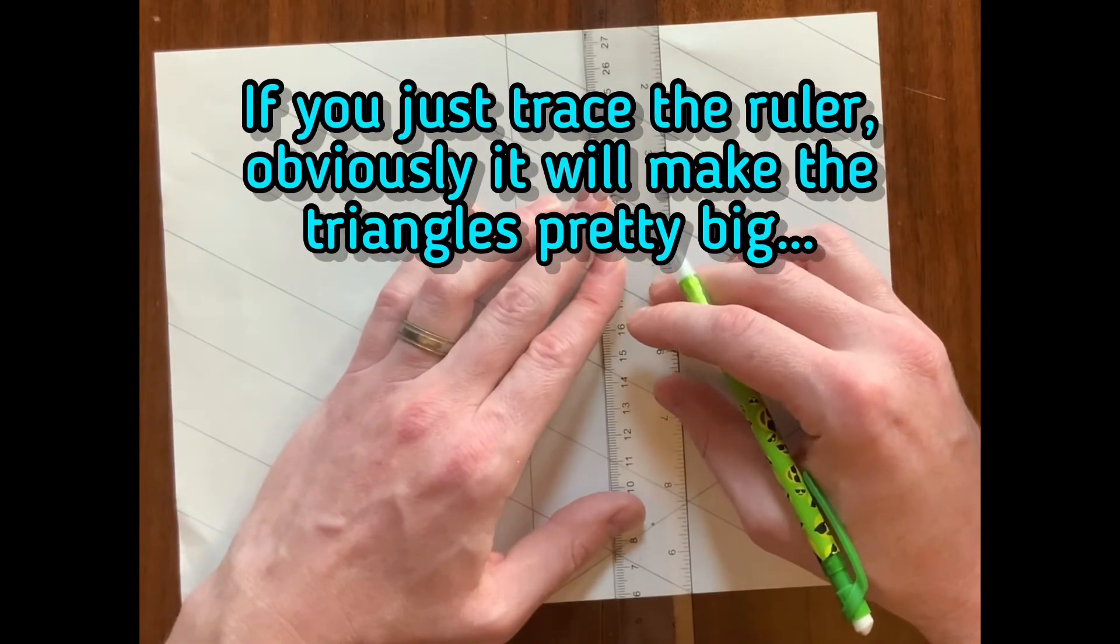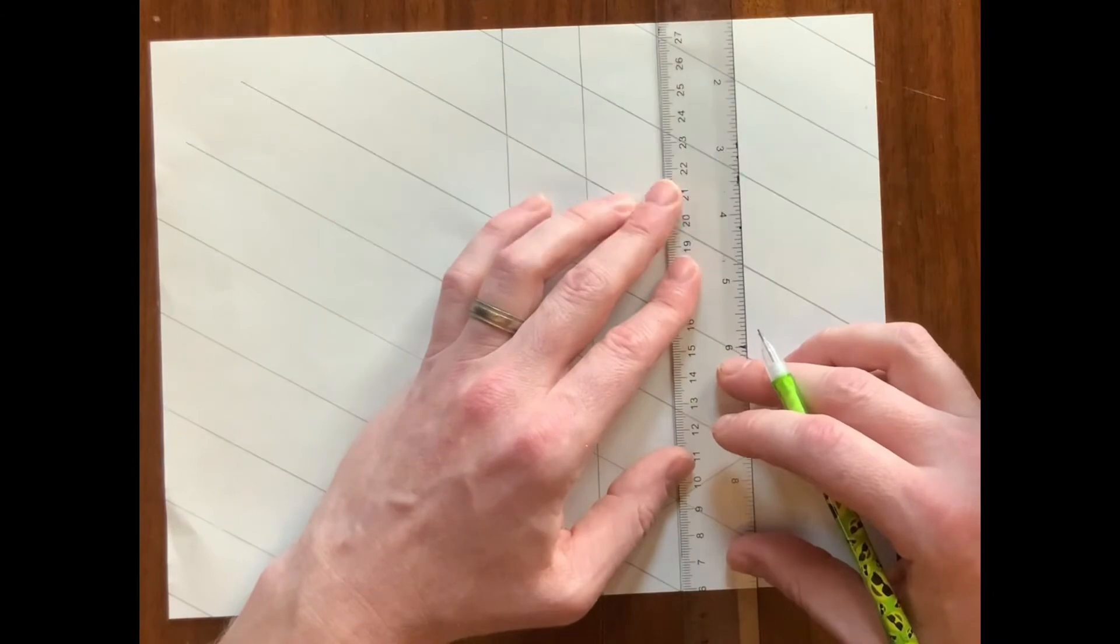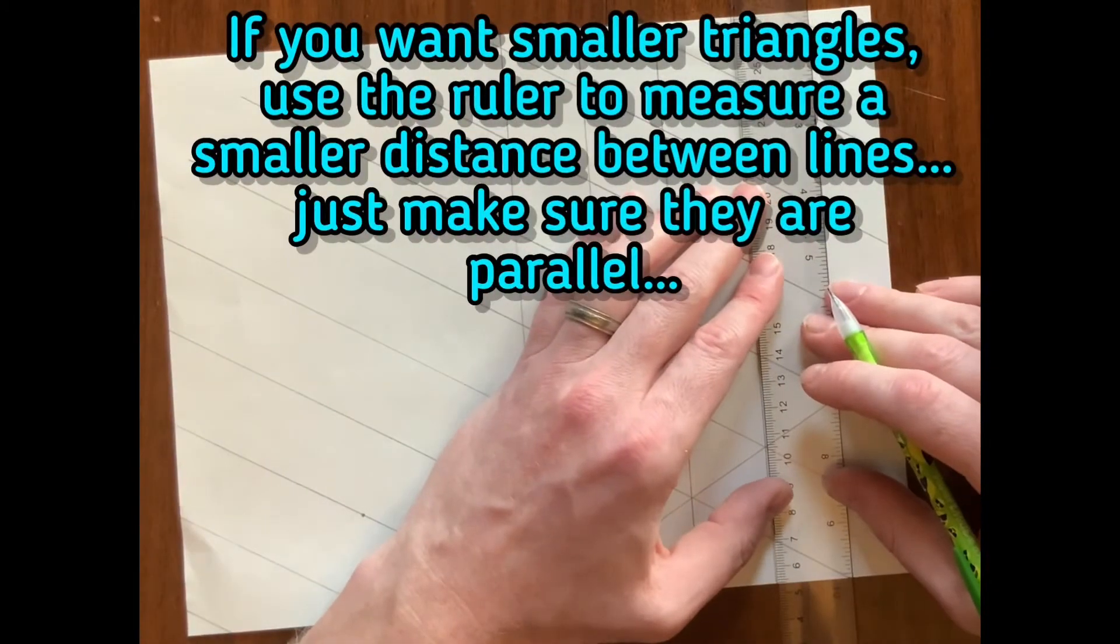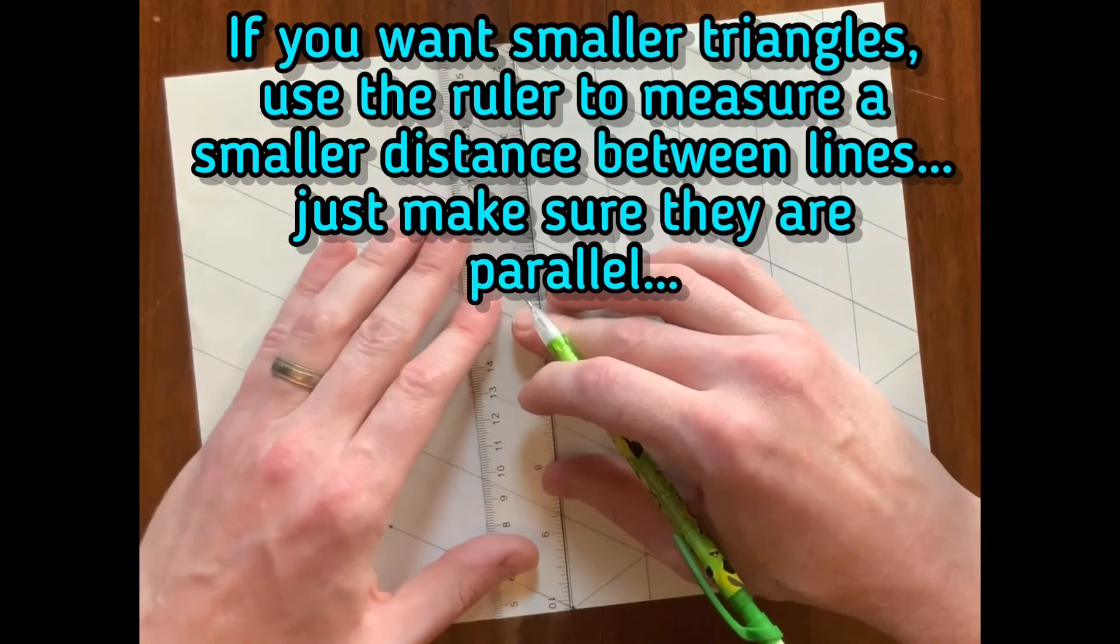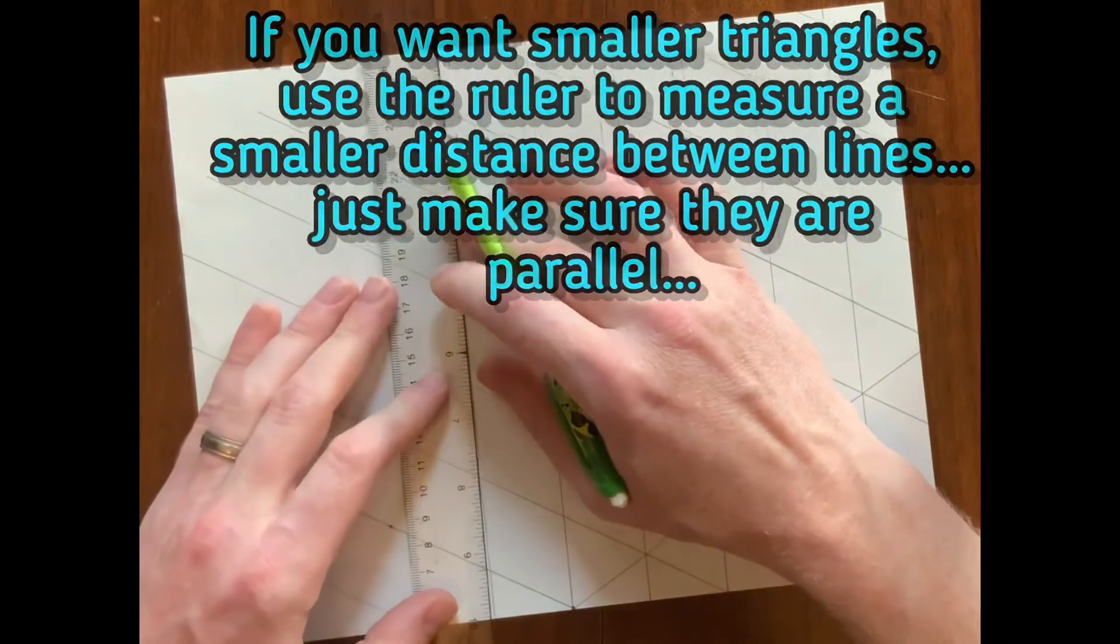If you just trace the ruler, it'll make the triangles pretty big. If you want smaller triangles, use the ruler to measure a smaller distance between lines. Just make sure they're parallel.